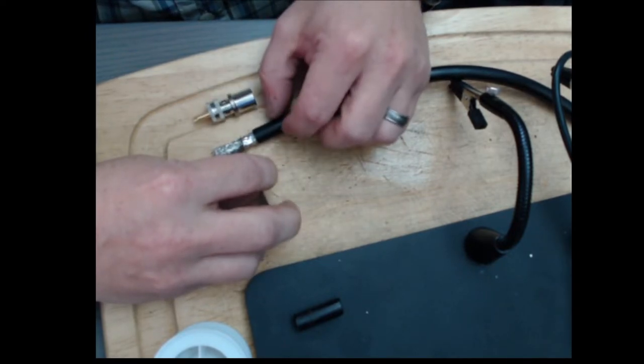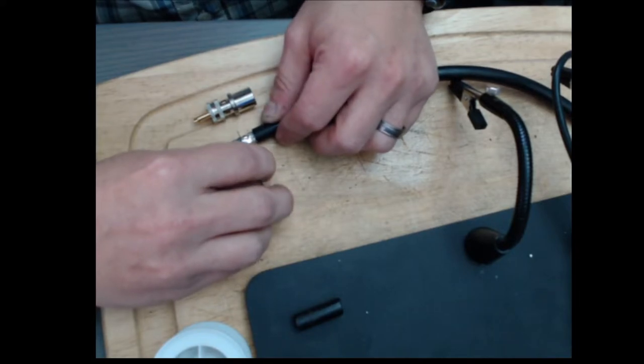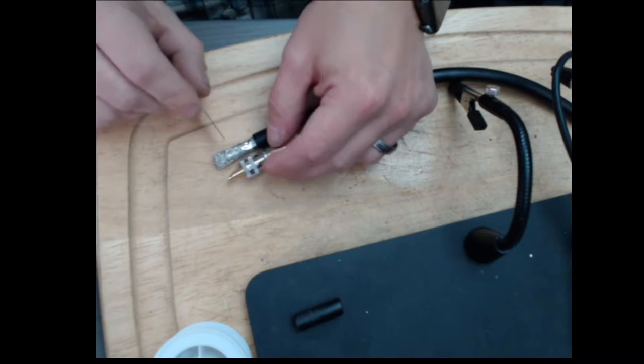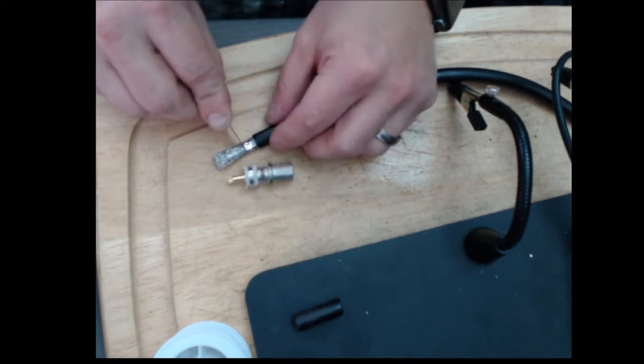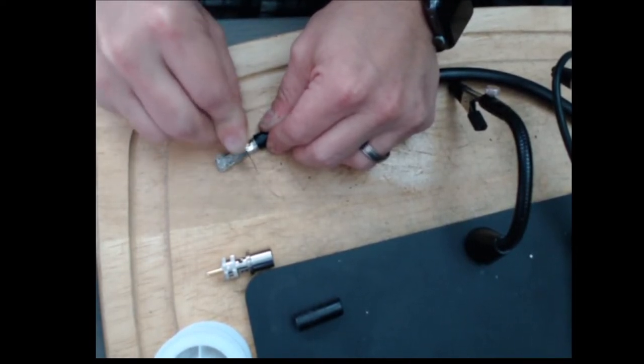We need to cut through the outer shielding and through the insulator, but not through the center conductor. This is a little bit harder. Again, I just use a razor blade, go by feel. And right now I'm going through the solder, I can feel. A little harder to get through the solder. And you're left with that right there.